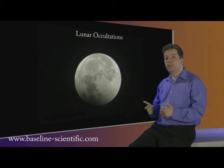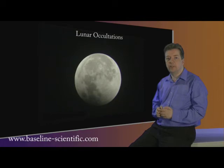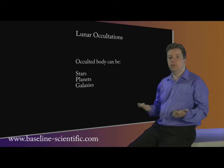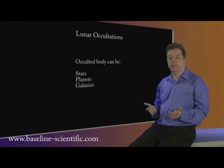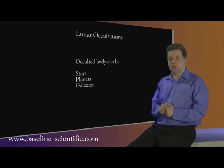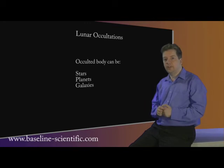A lunar occultation occurs when the Moon passes in front of another body, blocking its view for a short time. This other body can be almost anything — stars, planets, even galaxies. Despite being very easy to observe, these events can tell us a great deal, both about the object and the Moon itself.